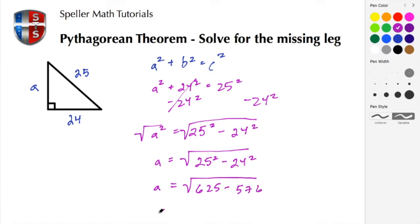Then we can do our subtraction inside here. So a is equal to, when we subtract those two we come out with the square root of 49, and the square root of 49 is 7. So here we found length a to be 7.